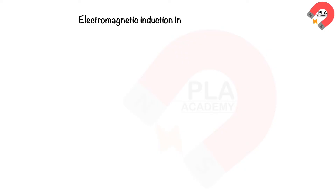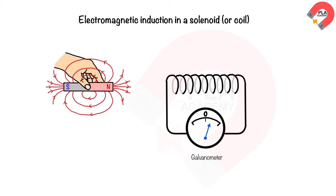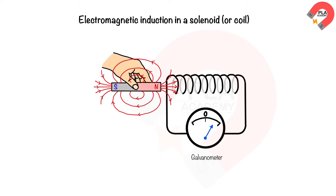Electromagnetic induction in a solenoid. When the north pole of a magnet moves into the solenoid and stops, the needle of the galvanometer deflects to the right and then returns to zero. This generates an induced current in the solenoid, which induces an induced EMF in the wire.